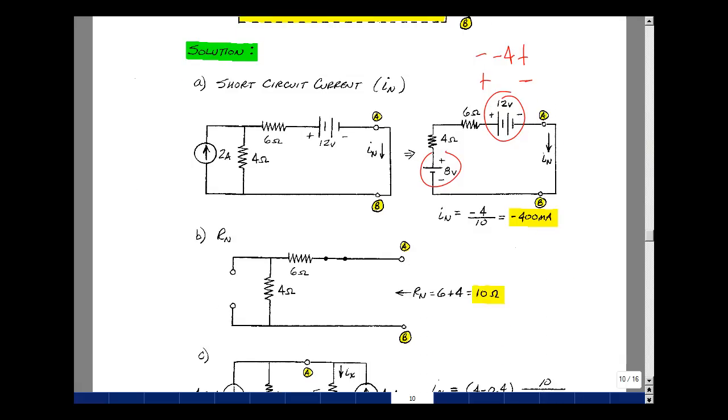Setting all the independent sources equal to zero, I'm going to short circuit the battery, open circuit the current source, and look back into those terminals A and B. I just see the 6 in series with the 4, so that's 10 ohms.